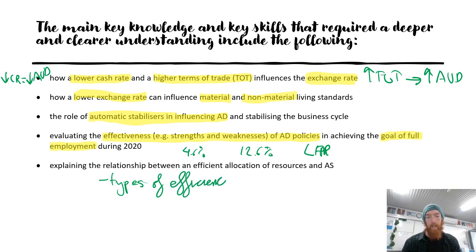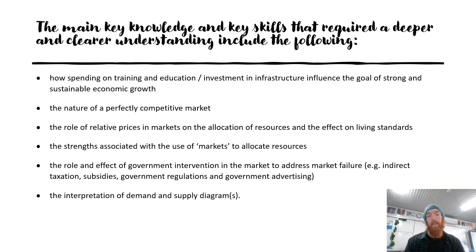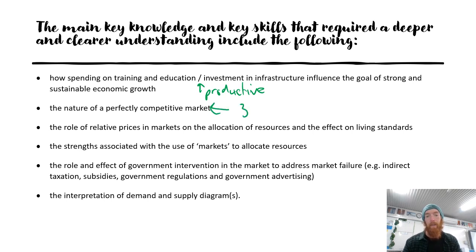How spending on training, education, and investment in infrastructure influences the goal of strong sustainable economic growth: it's about the increase in productivity or efficiency — more output per unit of input — which increases our productive capacity and makes us more able to produce. The nature of the competitive market is about preconditions, so your three main preconditions: many buyers and sellers, resource mobility, and homogeneous goods.